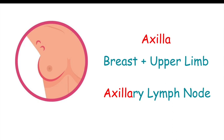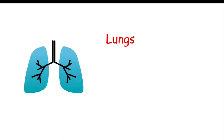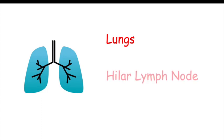Now let's look at the lungs. A patient with sarcoidosis usually has bilateral hilar lymphadenopathy, since sarcoidosis can involve the lungs. So we can remember that the lungs drain into the hilar lymph nodes.